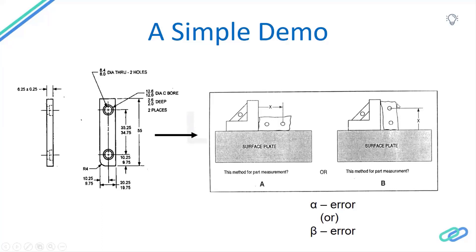...when you place the same part with the other surface on the surface plate and try to measure, this part might be a rejected bad part. It is not clear from the drawing what is our design intent — which surface must be our master surface from which the features are to be measured. All those things are not clear in this drawing, so the manufacturer and the quality inspector can make their own decision on how to measure these features, which in turn will give us alpha errors and beta errors.